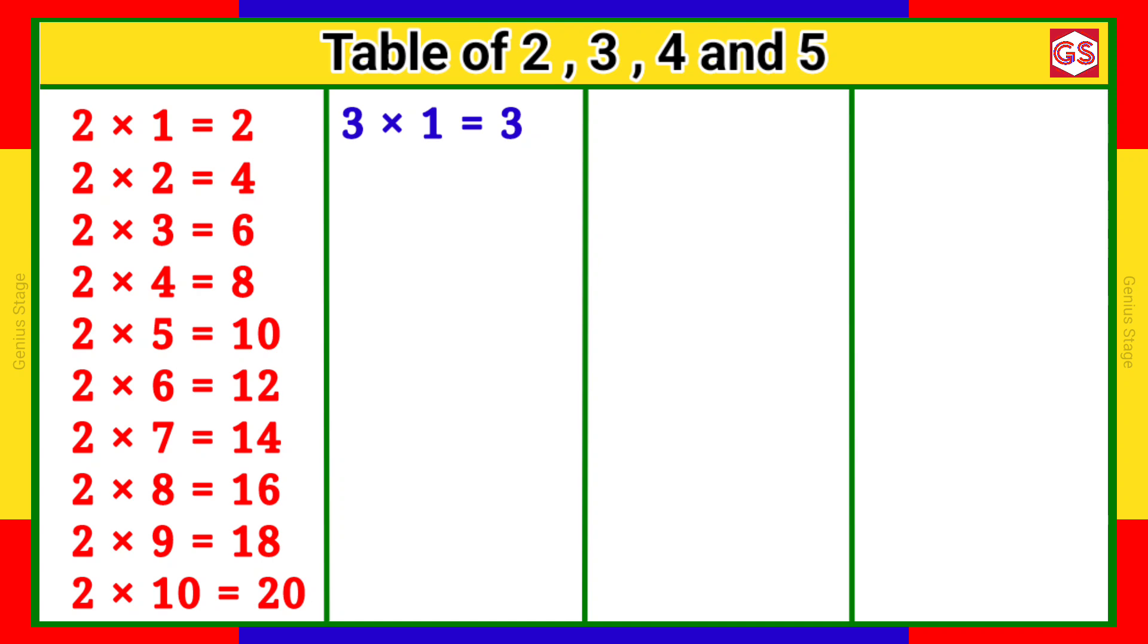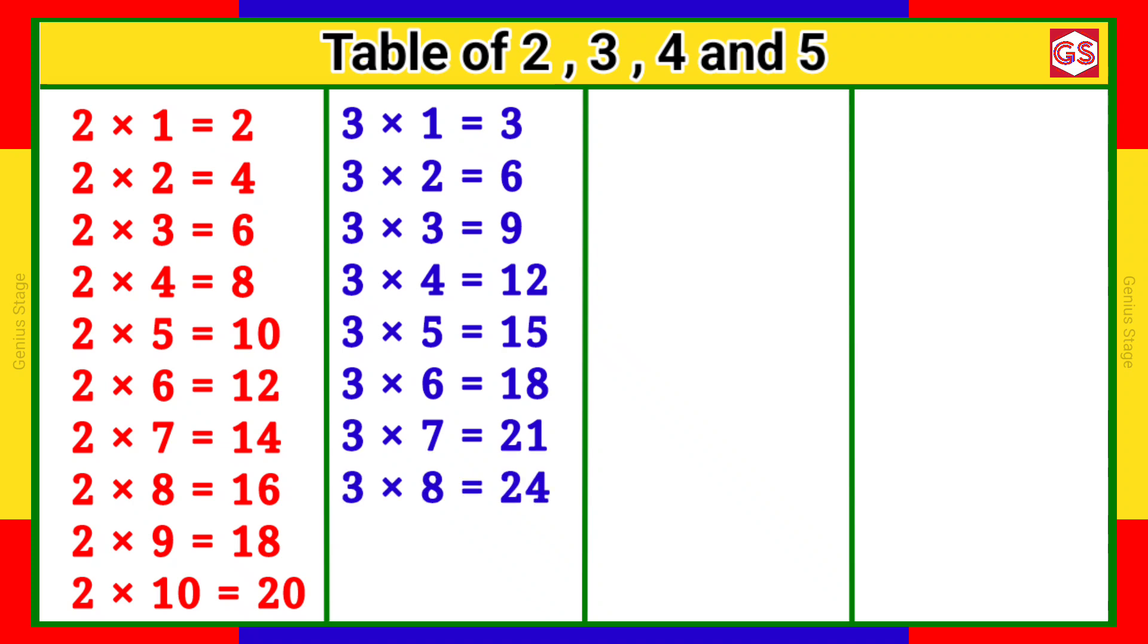3 1s are 3, 3 2s are 6, 3 3s are 9, 3 4s are 12, 3 5s are 15, 3 6s are 18, 3 7s are 21, 3 8s are 24, 3 9s are 27, 3 10s are 30.